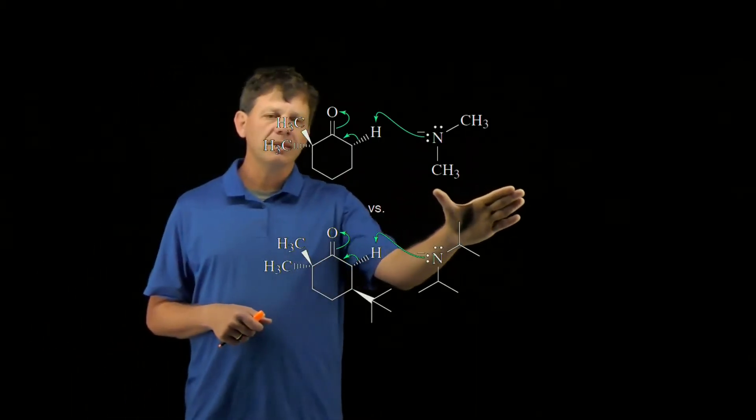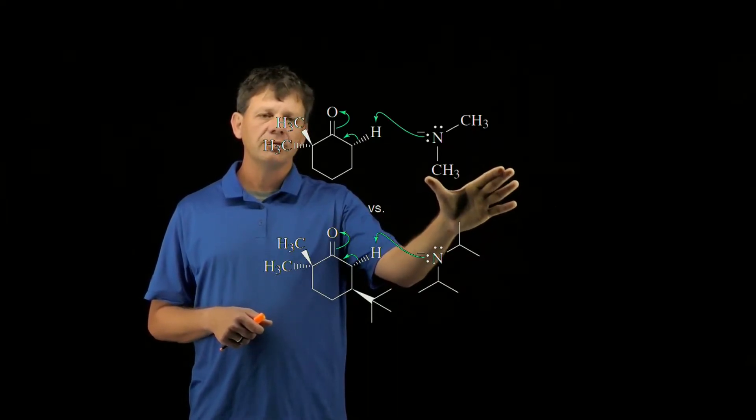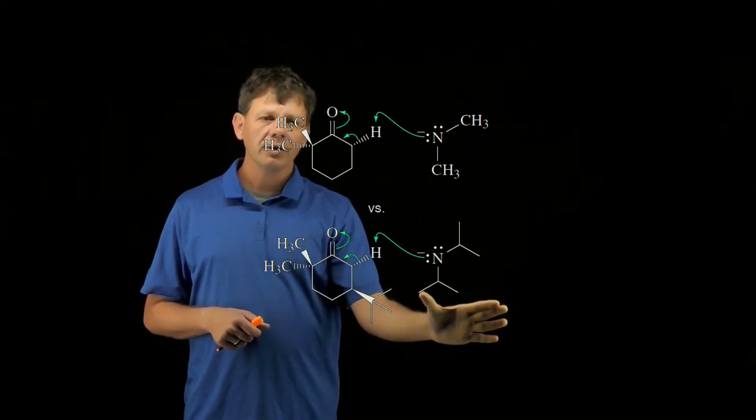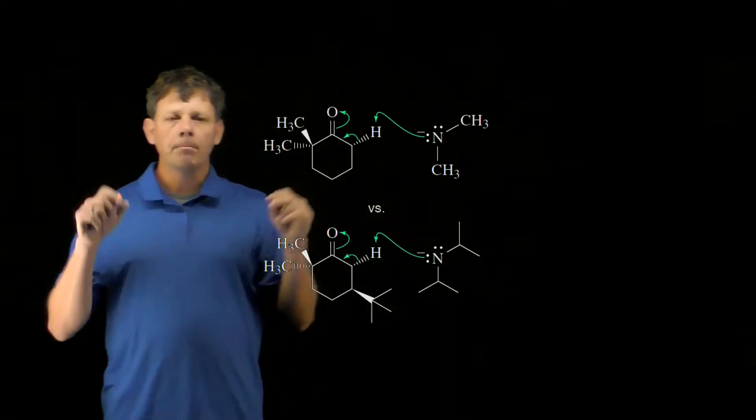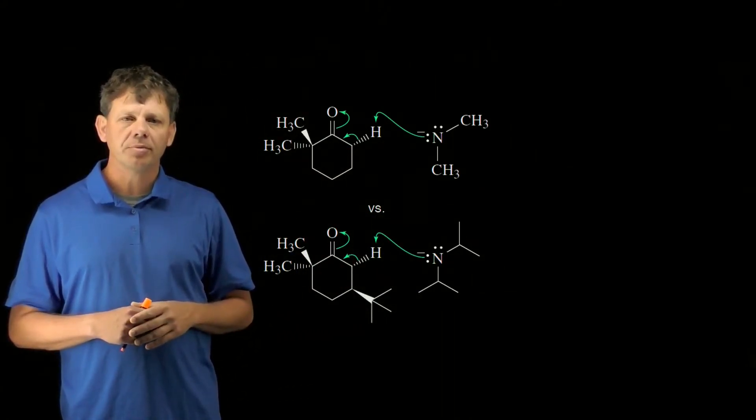Similarly, if we look at the base that's being used, this nitrogen has two methyl groups coming off of it, whereas this nitrogen has two bulkier or larger isopropyl groups.